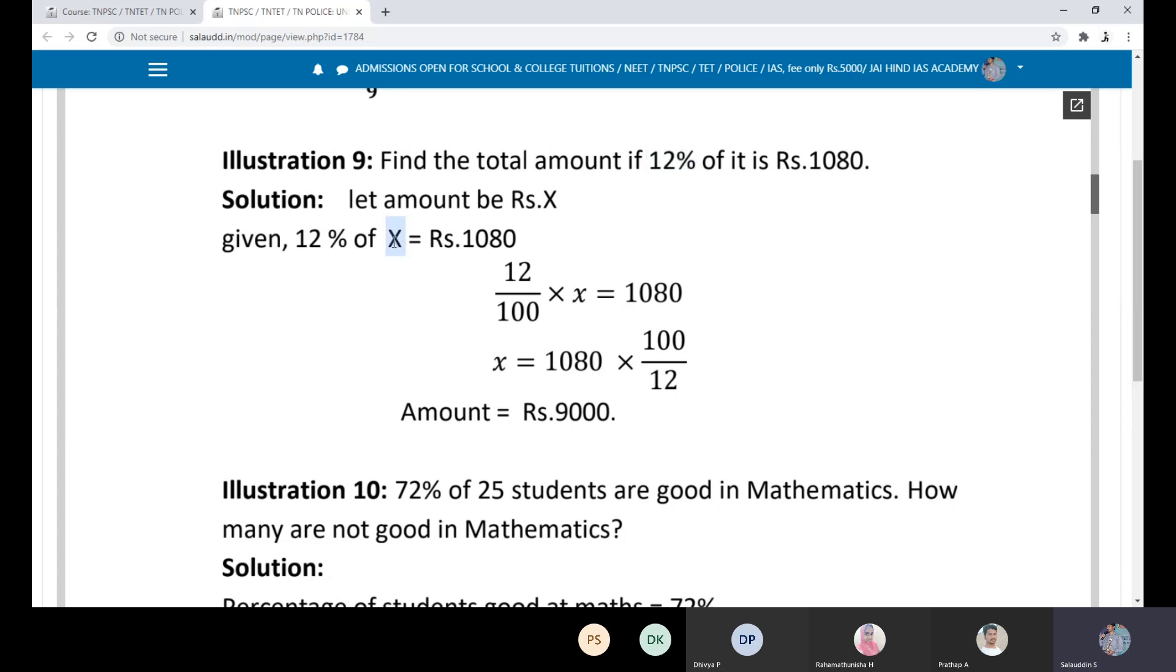Let the total amount be X. So 12% of X is equal to 1080.